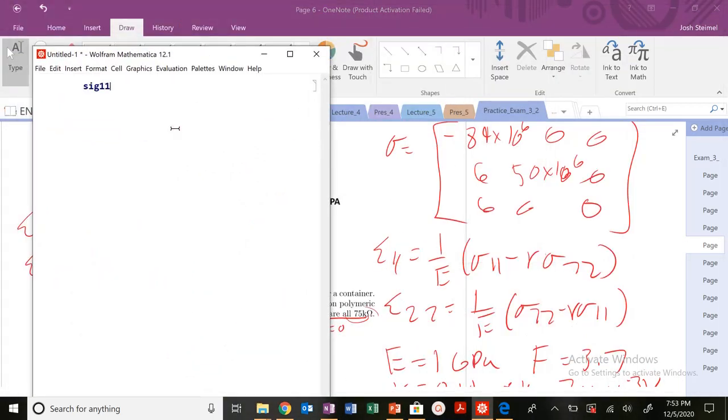So let's go ahead and write these values out. My sig 1.1 is equal to minus 89 times 10 to the 6. My sig 2.2 is equal to 50 times 10 to the 6. My E equals 1 times 10 to the 9. My nu is equal to 0.4. And what else do we have? F is equal to 3.7. My E1.1 is equal to 1 over Y times sig 1.1 minus nu times sig 2.2. My E2.2 is equal to 1 over Y times sig 2.2 minus nu times sig 1.1.